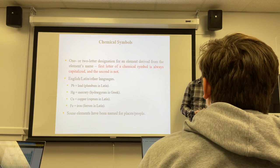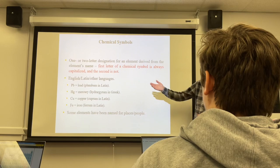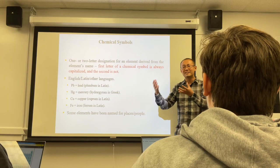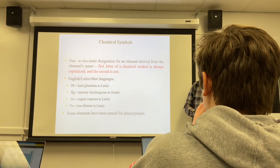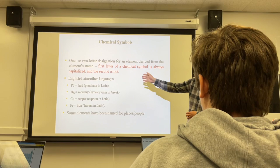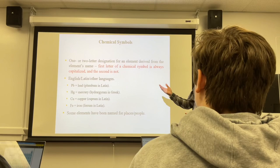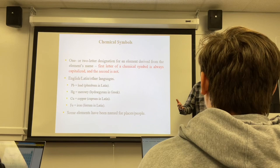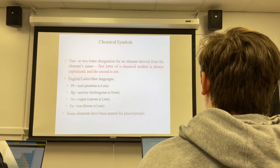Symbols come from the element's name, but the name doesn't have to be English — some are from Latin or other languages. Some are named after the country where the element was discovered, or the country of the scientist who discovered it. For example, mercury, copper, lead, gold, and iron come from non-English (Latin) names. Others like nitrogen (N), oxygen (O), carbon (C), and hydrogen (H) come from English names.